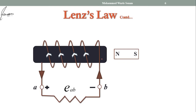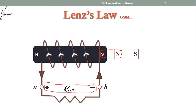If you apply Maxwell's right-hand thumb rule to find the direction of magnetic field due to the current inside the coil, you will notice that the north pole will be on the left side and the south pole on the right side. Near the north pole of the magnet, a south pole is induced. So the induced EMF E_AB is not opposing the incoming magnet — this south pole will actually attract the north pole of the incoming magnet, meaning it is supporting it, not according to Lenz's law.